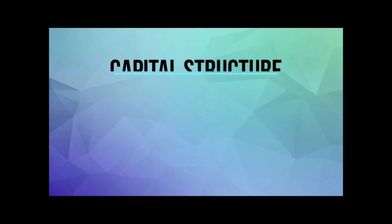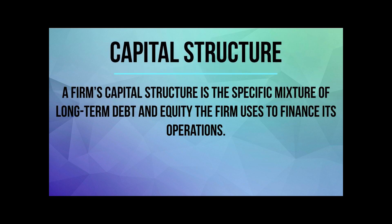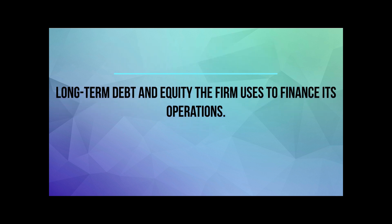The second financial management decision is capital structure, which relates to how the firm will finance its long-term assets. It is the specific mixture of long-term debt and equity the firm uses to finance its operations. The financial manager must find out how much the firm should borrow and what are the least expensive sources of funds. Making the right capital structure decision is very important for the firm.